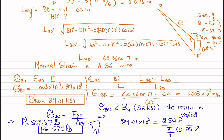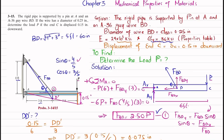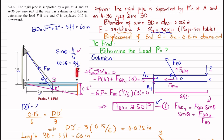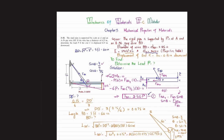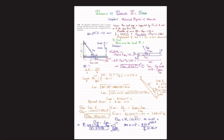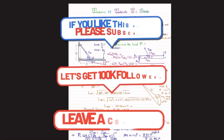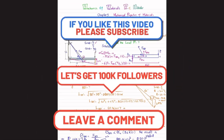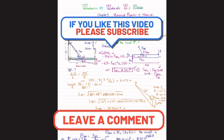So P = 570 pounds is the load applied at end C that causes point C to displace 0.15 inch downward. That concludes Problem 3-15.